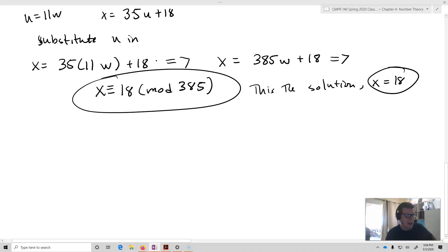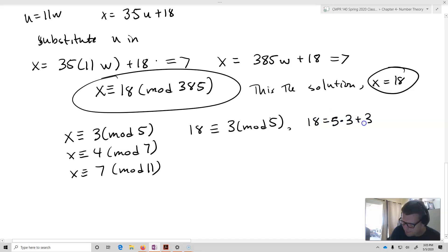And what we can do is we can actually plug that back into our congruences and see if we end up with the correct answer. So we'll take x is congruent to 3 mod 5, x is congruent to 4 mod 7, x is congruent to 7 mod 11. So we take 18. Is 18 congruent to 3 mod 5? Well, yeah, it is. Because 18 equals 5 times 3 plus 3.